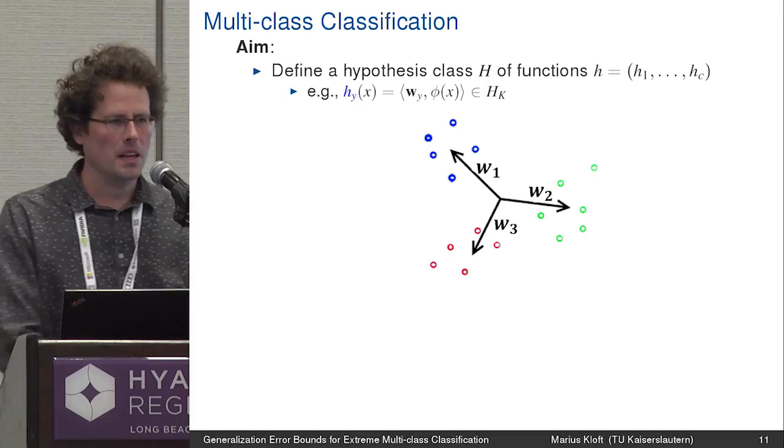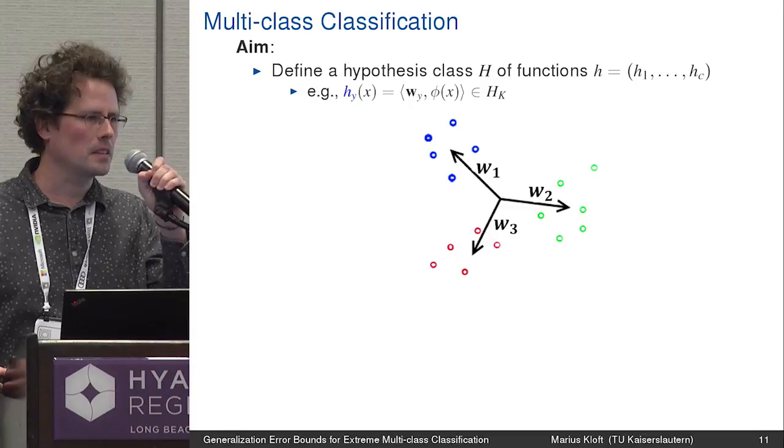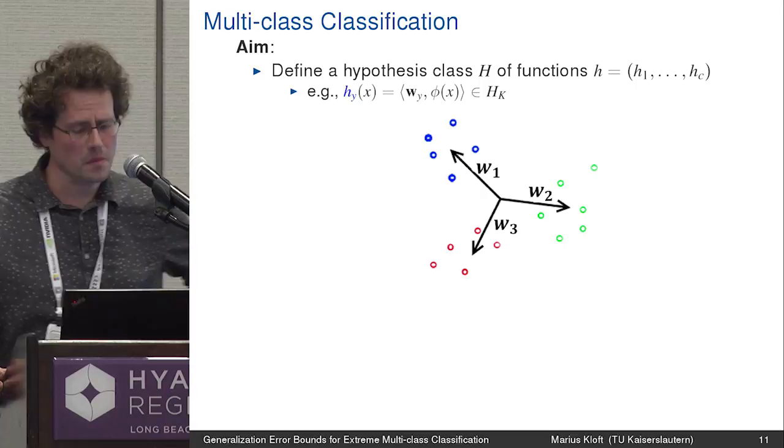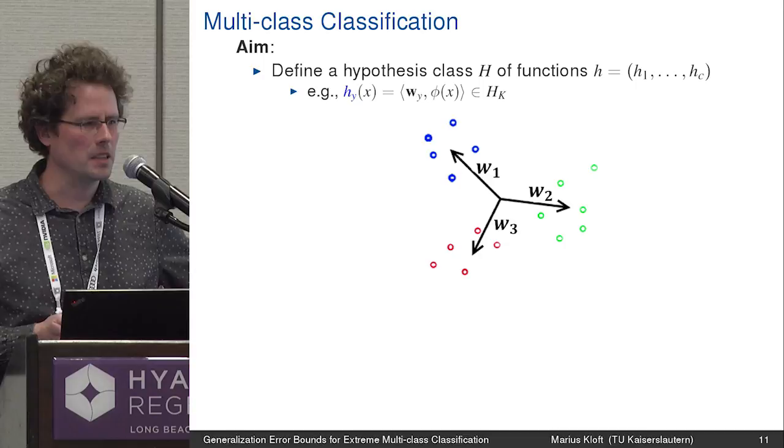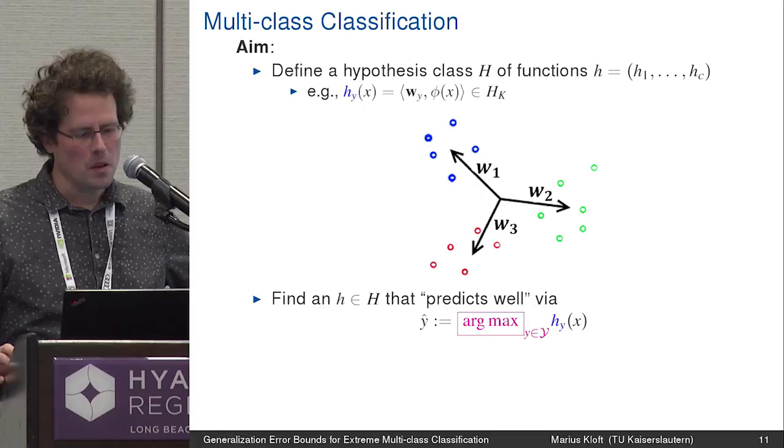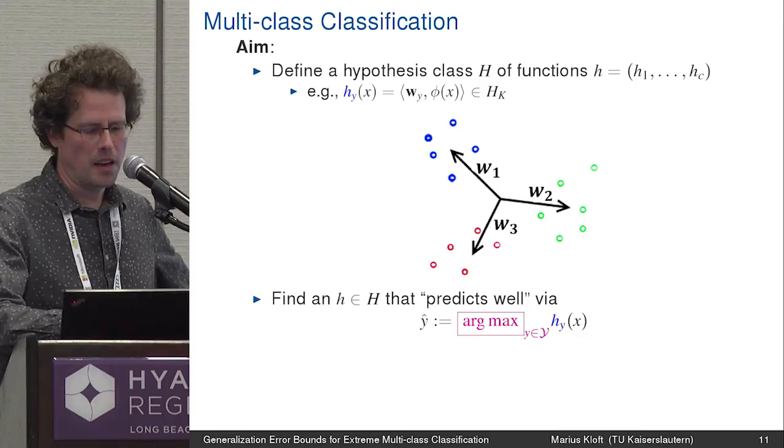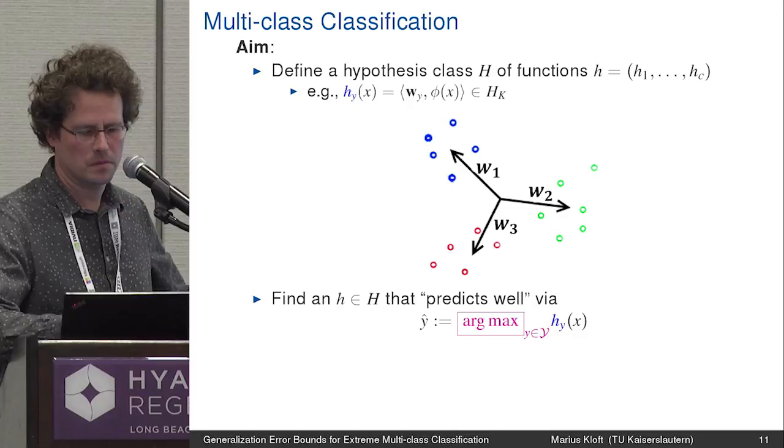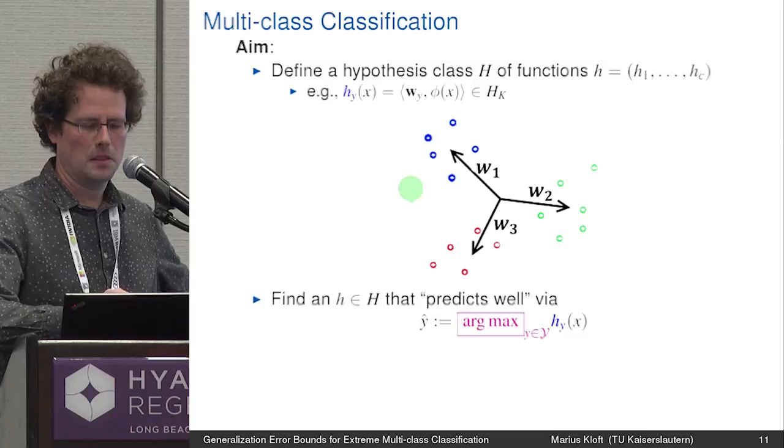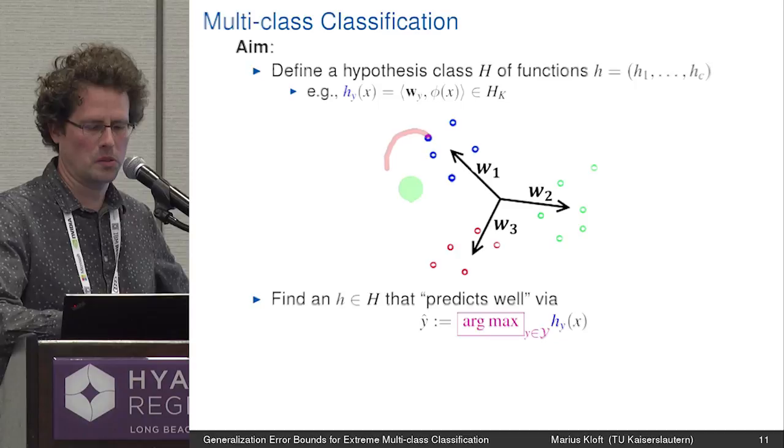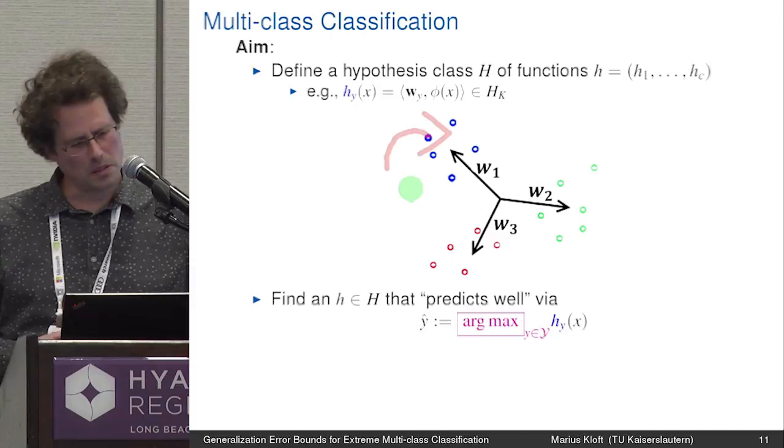Okay, so clearly there are several multi-class classification algorithms out there, and some algorithms that the results that I will present cover is multinomial logistic regression and also several so-called all-in-one multi-class SVMs, like for example, Cramer and Singer. Okay, so this talk is really about theory. If you want to hear more about algorithms, then I suggest you come to the WWW talk.